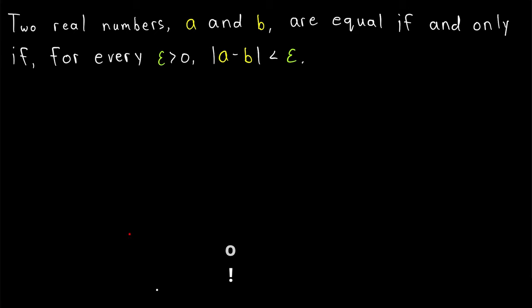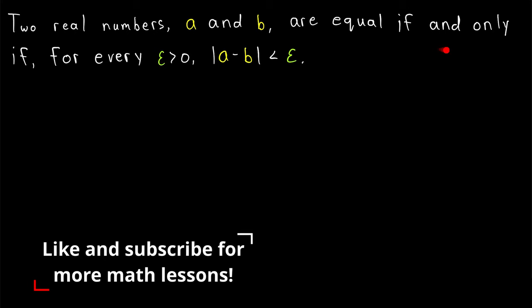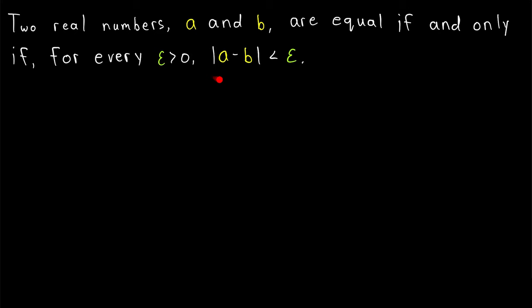We're going to prove that two real numbers, a and b, are equal if and only if, for every epsilon greater than zero, the absolute value of a minus b is less than epsilon. Recall that the absolute value of a minus b is the distance between a and b on a number line, so it should seem reasonable to suspect that if the distance between two numbers is less than any positive number, those numbers must be equal.